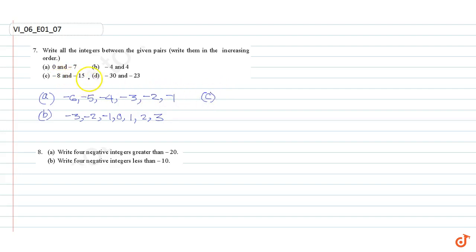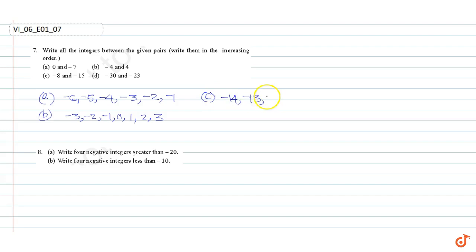Part c: between minus eight and minus fifteen. The integers in increasing order are minus fourteen, minus thirteen, minus twelve, minus eleven, minus ten, minus nine.